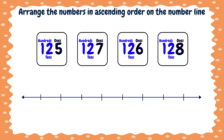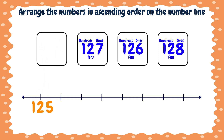It's also equal. Now, what do we do? We compare the ones place. Here there is five, here is seven, here is six, and here is eight. Which number is the smallest? The number five. Excellent. So the number one hundred twenty-five is the smallest. So we will put it here on the left.